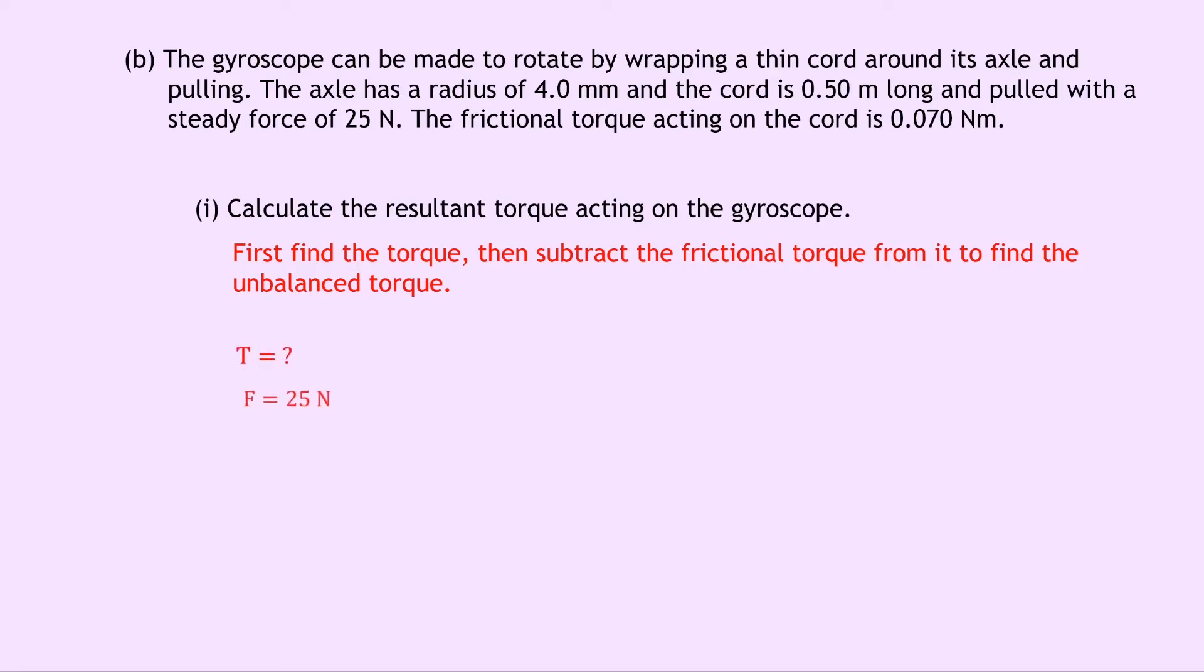So writing down what we know from the question, we're trying to find the torque T. We know the force is 25 N and the radius of the axle is 4.0 mm. Now we need to convert that into metres first, so we get 4.0 × 10⁻³ metres. And then using our equation for torque, we have T = Fr. And substituting in the numbers, we get 25 × 4.0 × 10⁻³. And putting that into your calculator should give you an answer of 0.1 Nm.